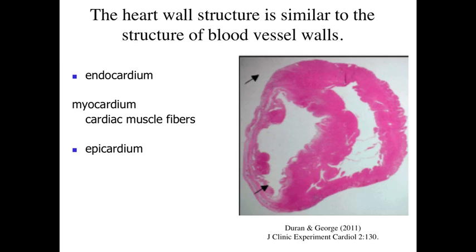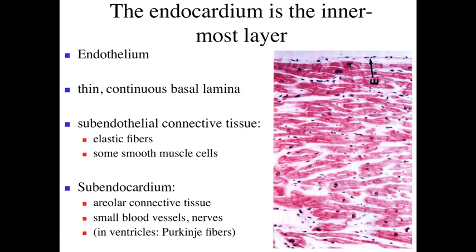Outside of the myocardium, outside of the smooth muscle layer, we're going to have the epicardium. The epicardium is the connective tissue layer surrounding the heart, roughly analogous to the tunica adventitia of our blood vessel walls. The endocardium is the innermost layer — the lumen of the heart is lined by an endothelium, a simple squamous epithelial lining giving a smooth surface. It sits upon a thin continuous basal lamina, and underlying that we have a subendothelial connective tissue with elastic fibers and some smooth muscle cells.